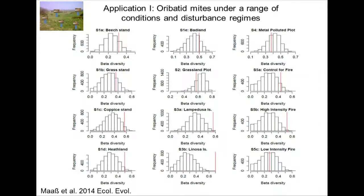I will apply the model to two study cases. Here we are applying it to the oribatid mite community — several communities sampled under a range of conditions and disturbance regimes. For example, here you see a high-intensity fire experiment where the real community has much higher beta diversity than expected, because the fire was creating a very patchy environment. But also in the Lampedusa Island, where the sampling regime was aiming at maximizing environmental heterogeneity, we also observe very high beta diversity with respect to the neutral prediction. But there are also many instances where the real community is consistent with the neutral model, like in this grass stand or this grassland plot, where the observed beta diversity falls just in the middle of the distribution. So there is a range of patterns.